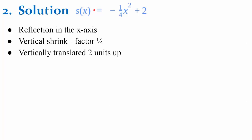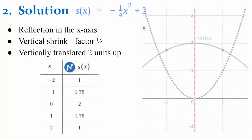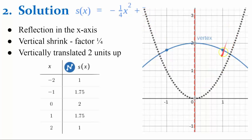Question two: function s is a reflection in the x-axis and a vertical shrink by a factor of one-fourth. The negative sign tells us it's a reflection in the x-axis, one-fourth tells us it's a vertical shrink, and c equals positive 2 means it has been vertically translated 2 units up compared to the parent function. The black dotted line is the parent function. The blue function s opens downward because of the reflection in the x-axis. They share the same axis of symmetry, and the vertex has shifted up 2 units. The blue function is wider because it has been vertically shrunk by a factor of one-fourth, shrinking toward the x-axis.